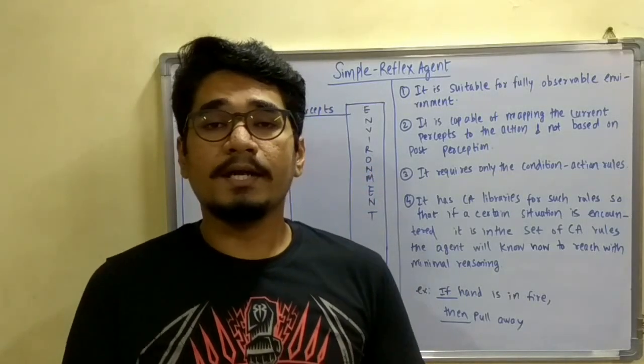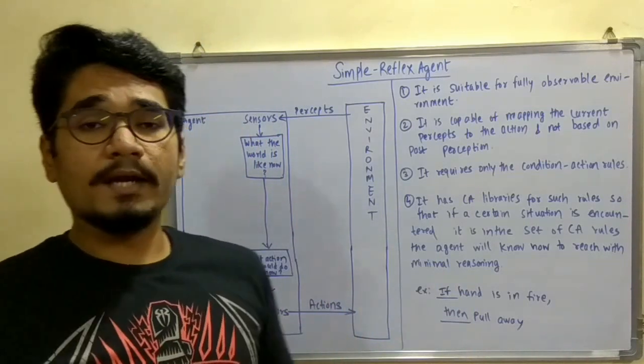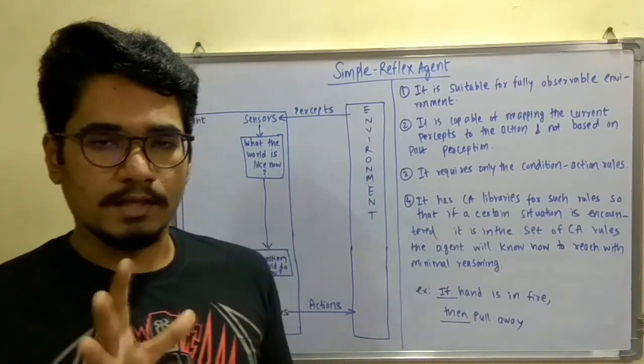Hello viewers, in my previous video I discussed the IA structure and its types. So in this video I will be discussing the various types of rational agents. There are five different types of rational agents in artificial intelligence.